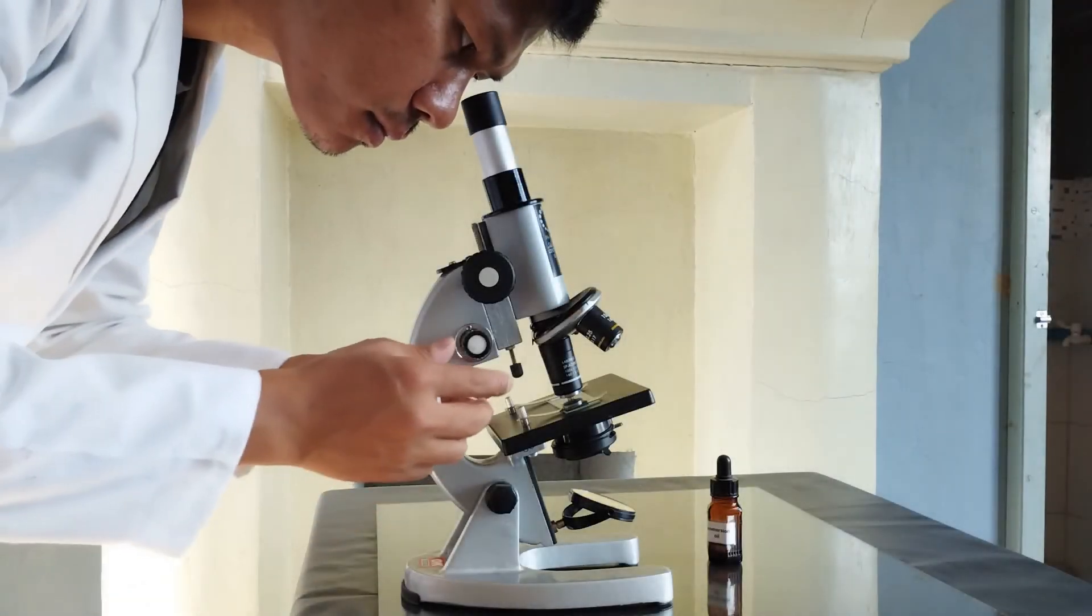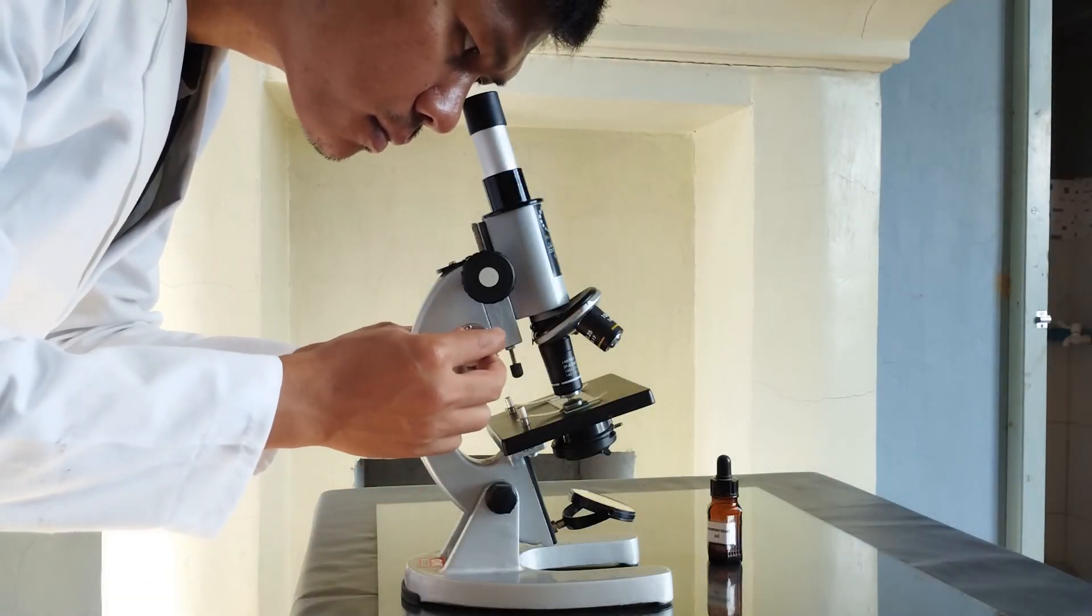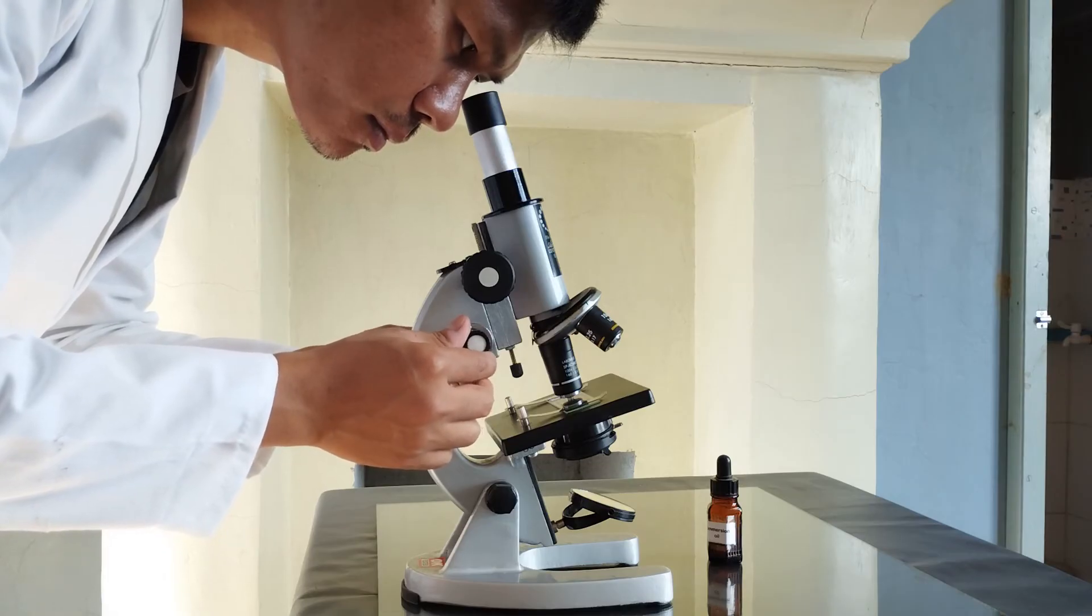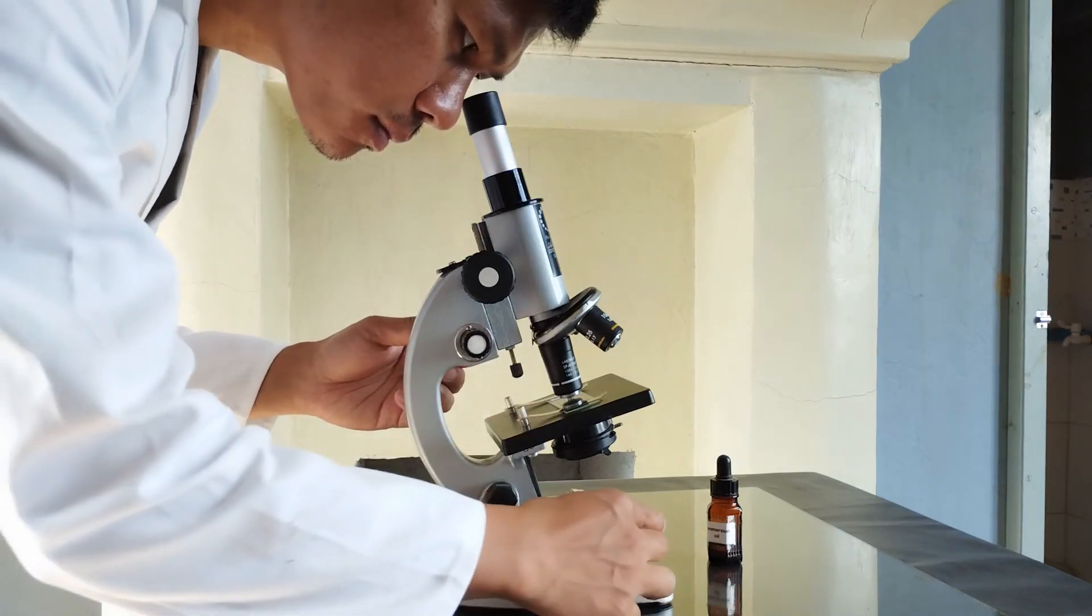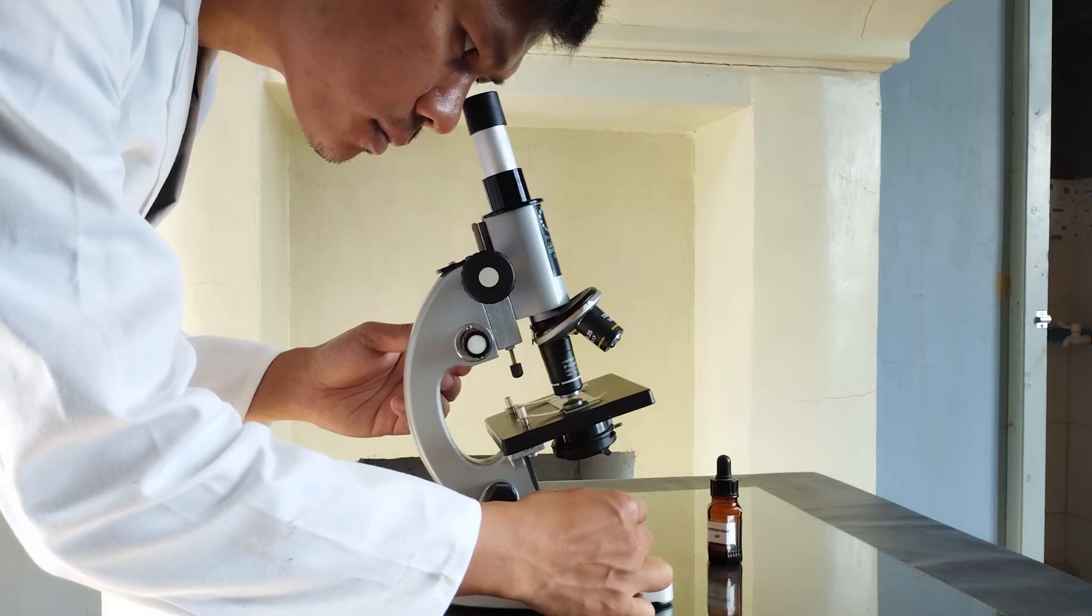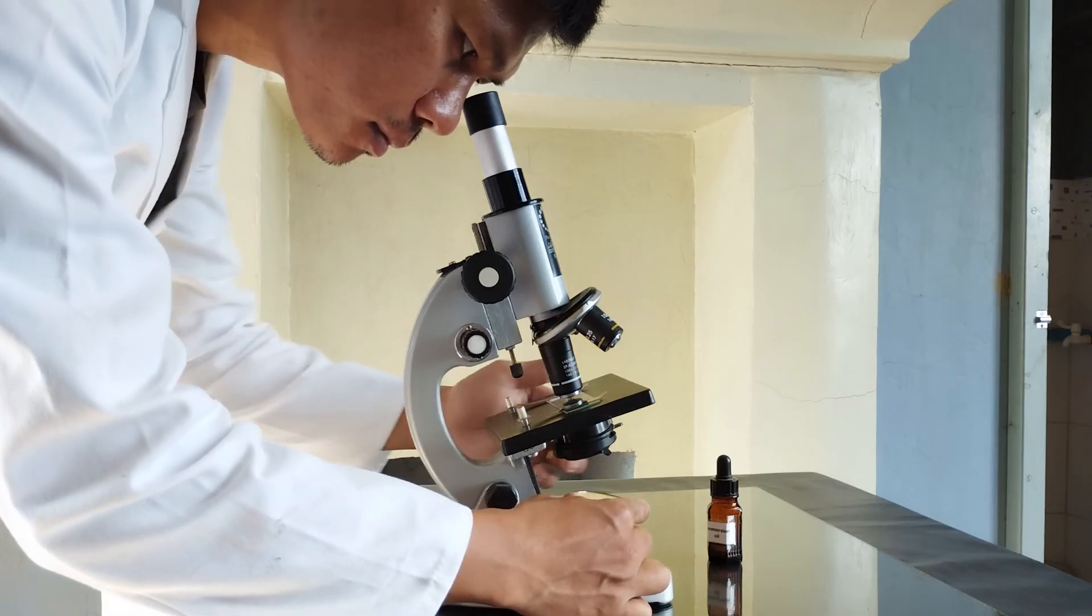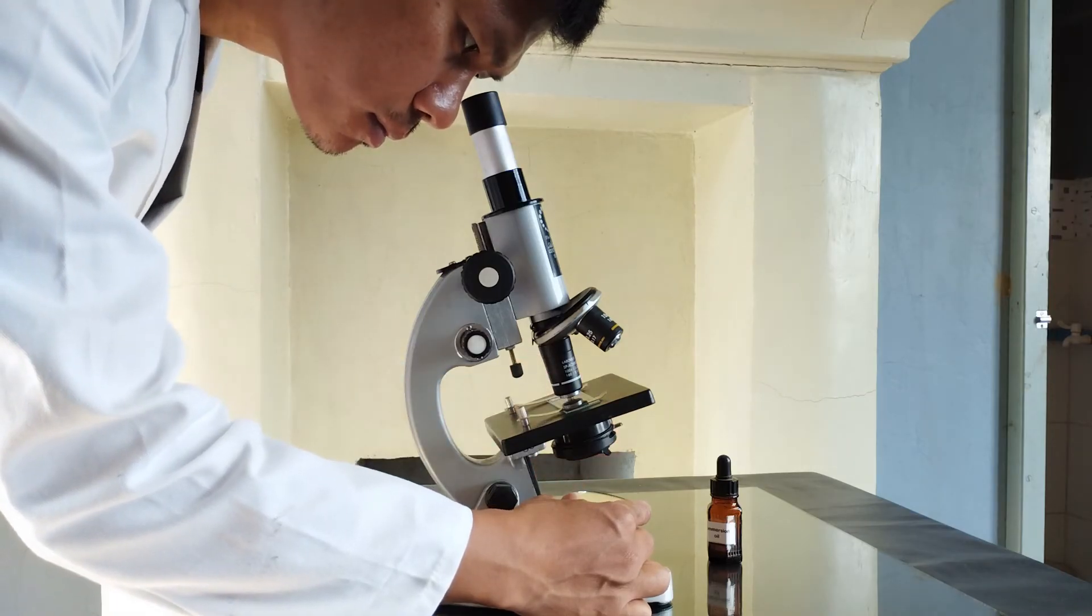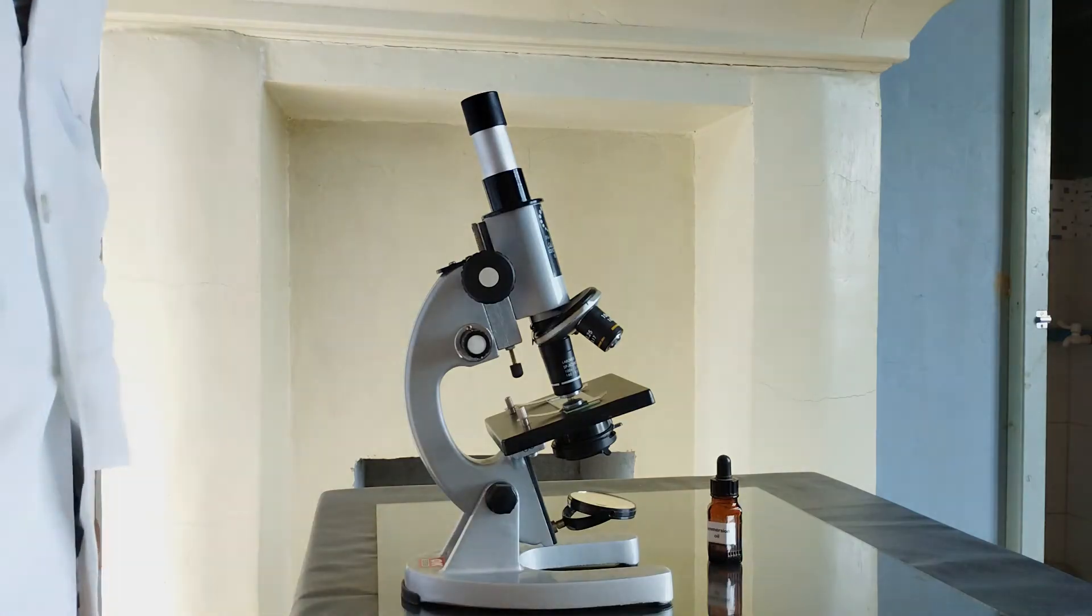Then carefully lower the objective lens until the external lens touches the oil surface on the slide. Now view through the eyepiece and focus the specimen using only the fine adjustment knob. Again, you might need to readjust the lighting for maximum contrast and ideal brightness. Oil immersion objectives require a more intense light source for satisfactory results. Inbuilt artificial light source such as halogen or LED lamp is therefore mostly used when working with immersion objectives.